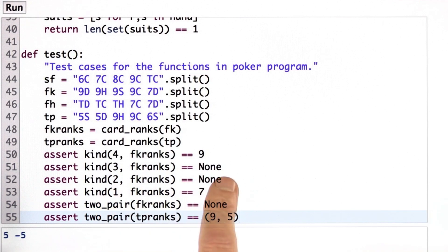Is there a two of a kind there? No. Is there one of a kind? Yes, there is. There's four nines and there's one seven. So one of a kind in the four of a kind ranks is, yes, there is. There's a seven.